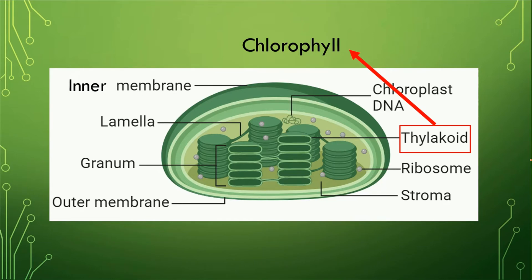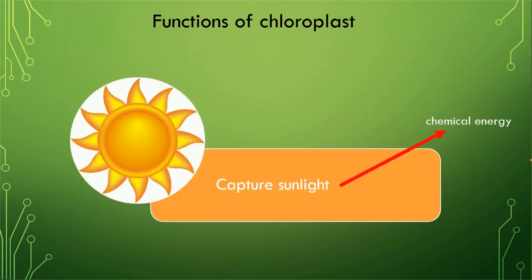Before we study the functions of chloroplast, please subscribe to my channel and hit the bell icon so you can get all the updates. The main function of chloroplast is that it captures the sunlight, and the light energy present in the sunlight is converted into chemical energy by the help of chloroplast.